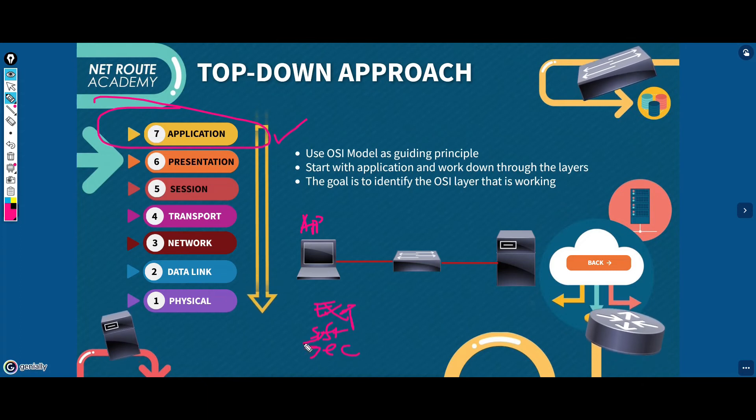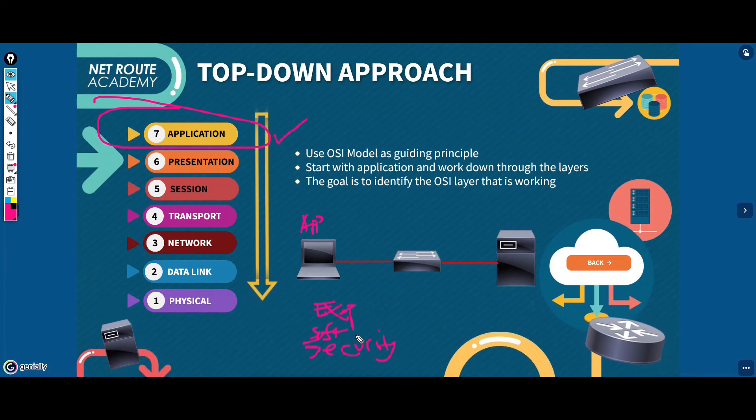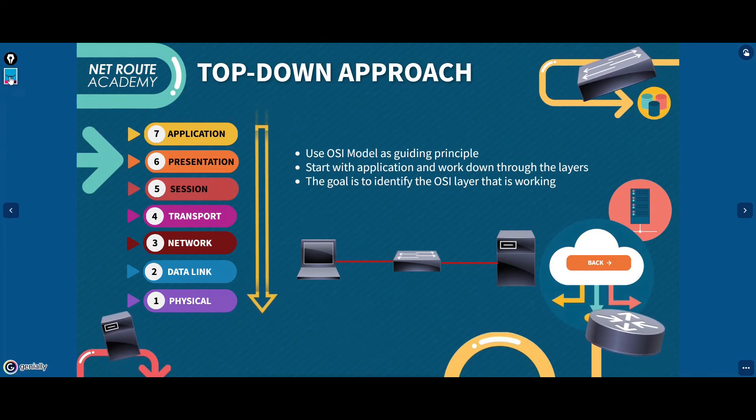The top-down troubleshooting approach is usually most suitable for problems that one person or only few people experience because lower layer, that is the network infrastructure problems, usually affect more than one person.